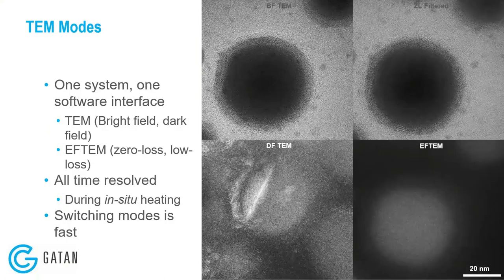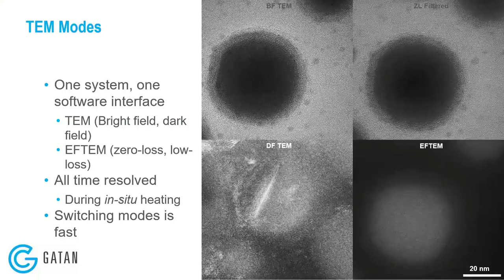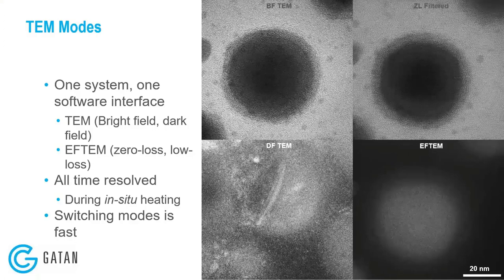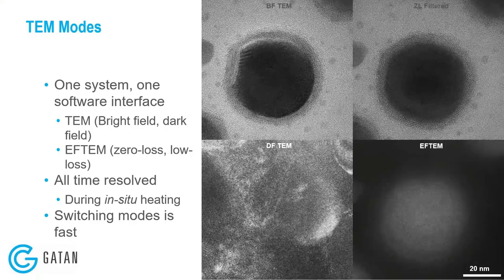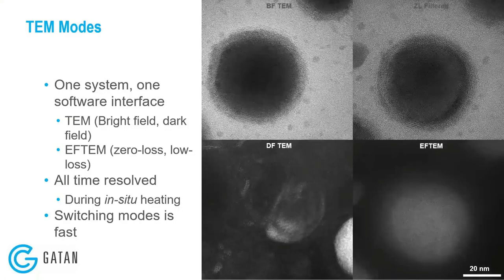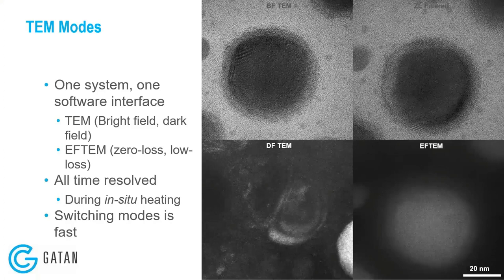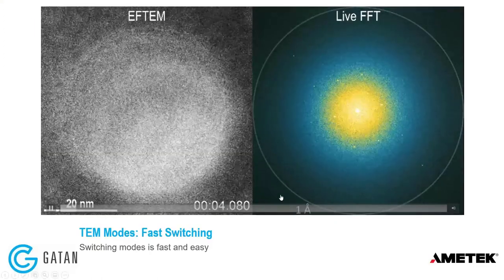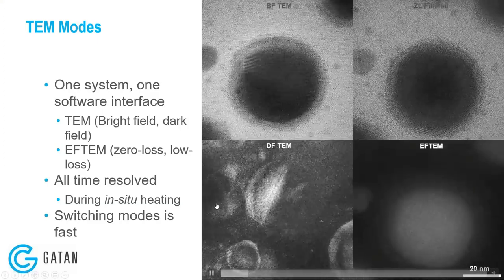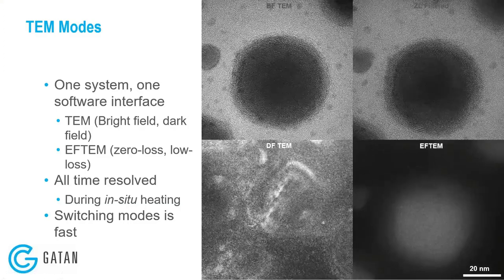Now I'm going to show a series of slides with some example data, showing all of these different modes. In each case I'm going to be looking at the exact same sample — this is a tin nanoparticle sample. You can see around the edge of the particle some oxide that's formed in situ as well. I'm heating and cooling this tin nanoparticle above and below its melting point, so it melts and recrystallizes. We can see the dynamic changes that are happening as this material melts and recrystallizes.